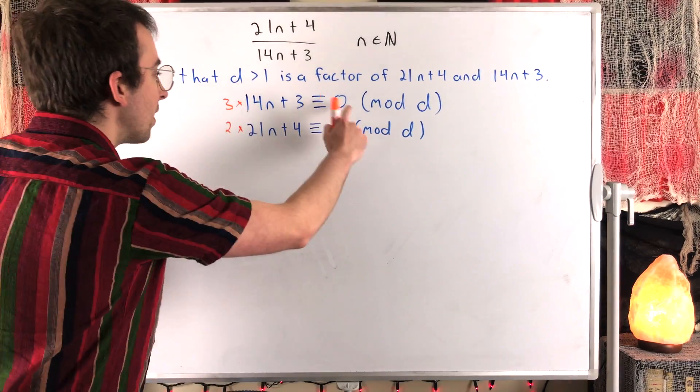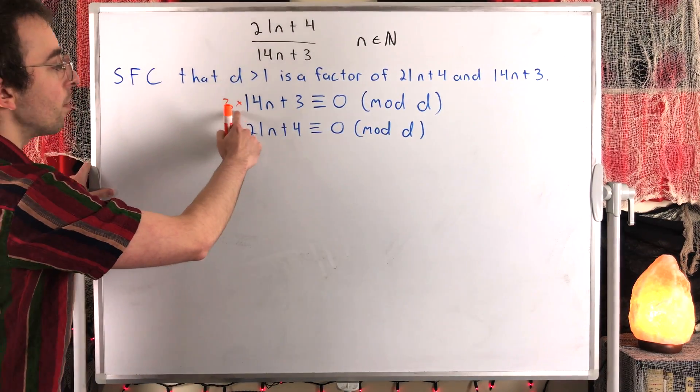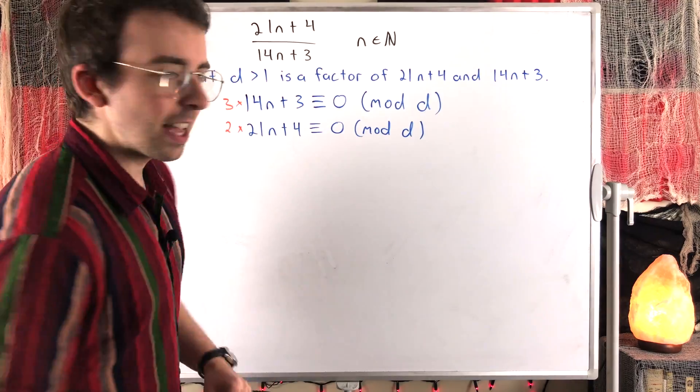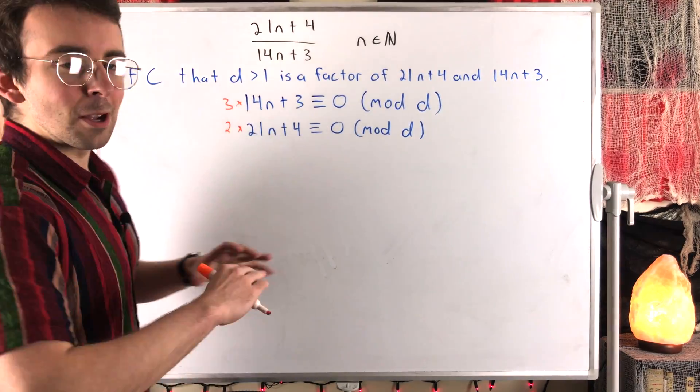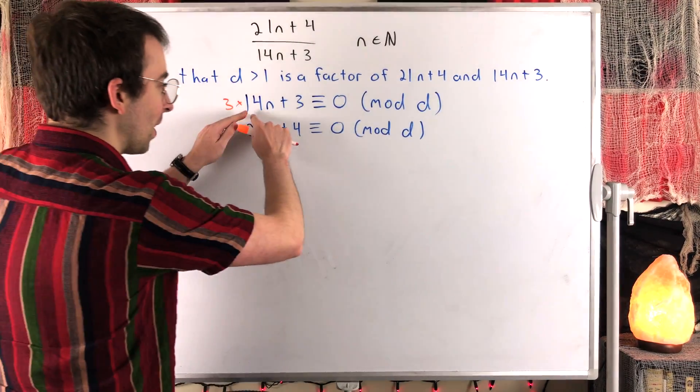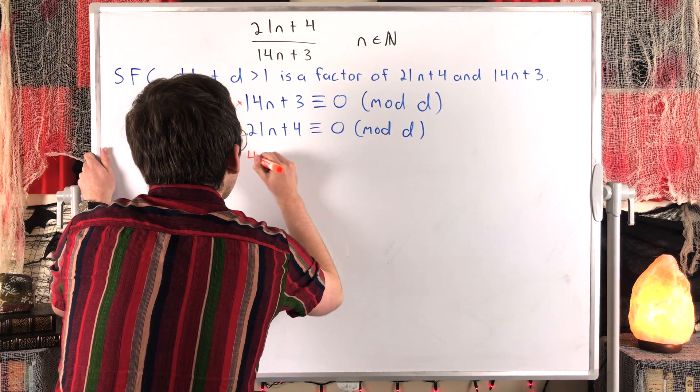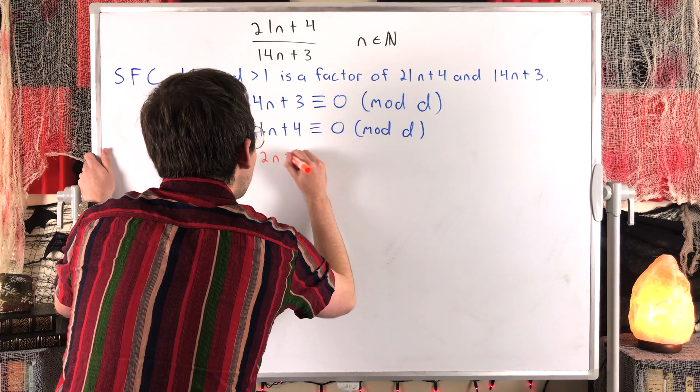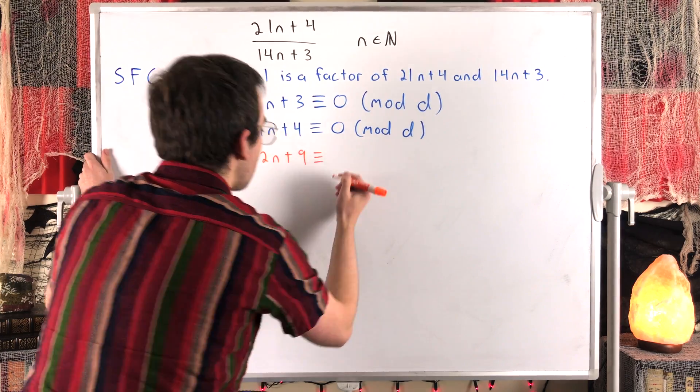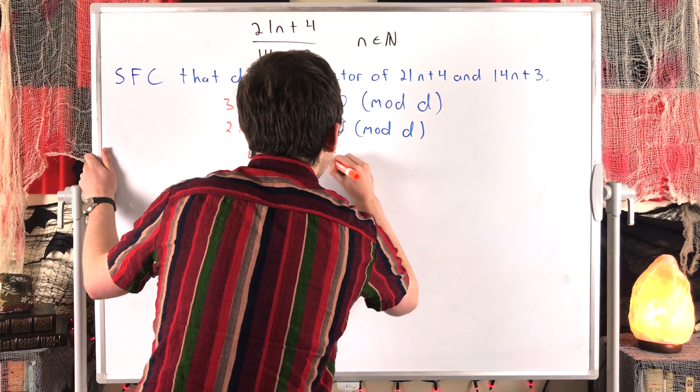What's that going to give us? Well, here on the top, we'll get 3 times 14n plus 3. Remember, that's what this writing kind of means. We're just multiplying this whole thing by 3. So if we multiply this whole thing by 3, we get 42n plus 9 is congruent to 0 times 3 is 0, mod D.